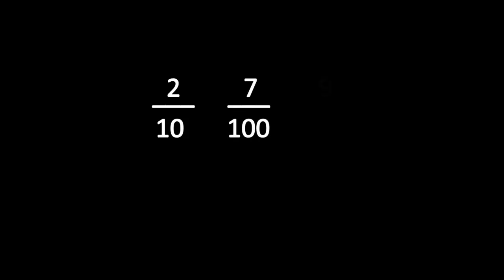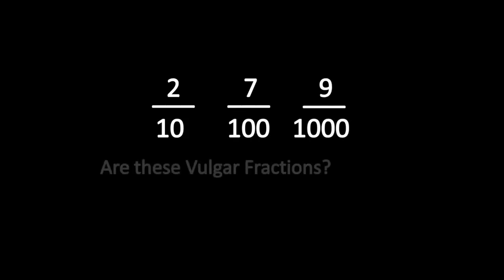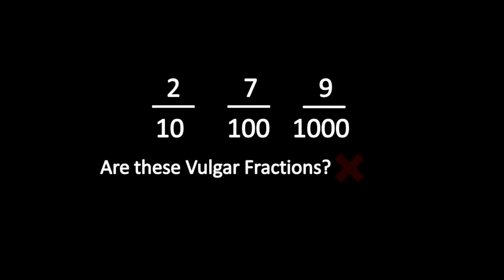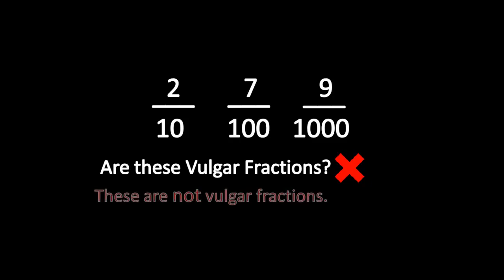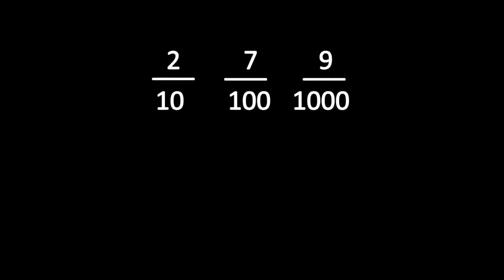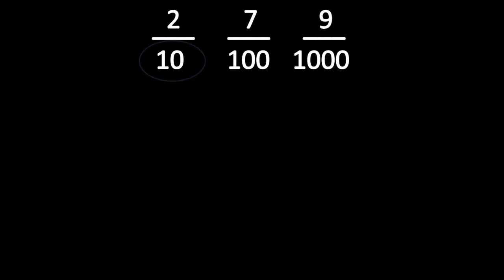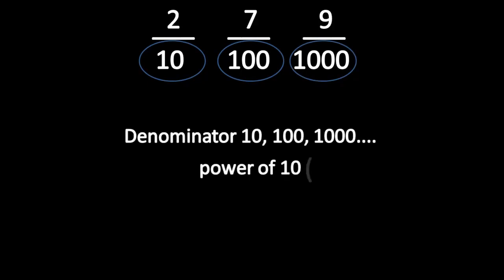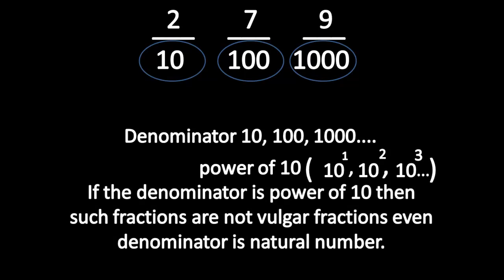Let us take some other examples: 2 by 10, 7 by 100, 9 by 1000. Are these vulgar fractions? No, these are not vulgar fractions. Why? These fractions are not vulgar fractions, even though the numerator and denominator are natural numbers. Here, we have the denominators 10, 100, 1000. These are the powers of 10 — that is, 10 to the power of 1, 10 to the power of 2, 10 to the power of 3. If the denominator is a power of 10, then such fractions are not vulgar fractions, even though the denominator is a natural number.